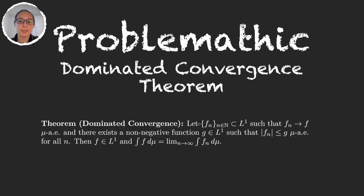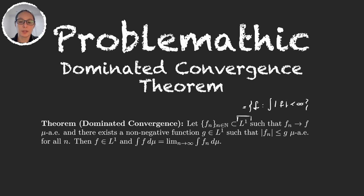Let's see what the theorem is telling us. It says that we have a sequence of functions in L1. L1 is the family of functions that have finite integral. We have this sequence that converges to another function f almost everywhere — so for almost every x, fn of x converges to f of x. Also, there exists a function g in L1 that dominates our sequence, so g is greater than the absolute value of our functions fn.